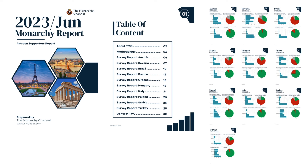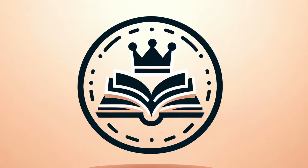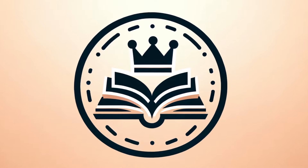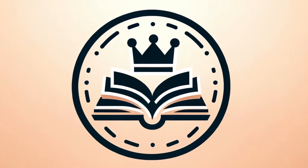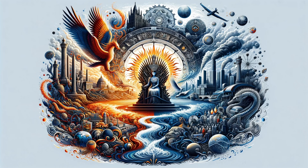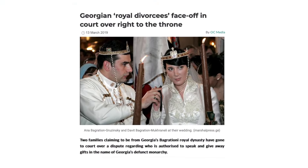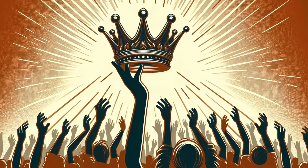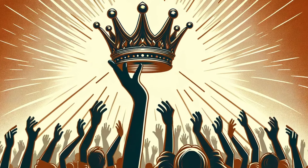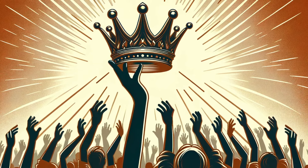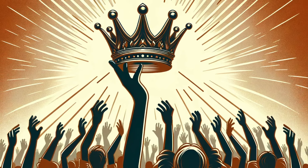Surprisingly, without any real effort or campaigns, monarchies retain a significant level of public support, often rivaling the trust people place in republics. So what have we learned from this journey through the intricate world of monarchy? We've seen its resilience, its adaptability, and its enduring appeal — but we've also recognized its vulnerabilities in a rapidly changing world. What are your thoughts on the future of monarchy? How do you see it adapting, surviving, or perhaps even thriving in the decades to come?